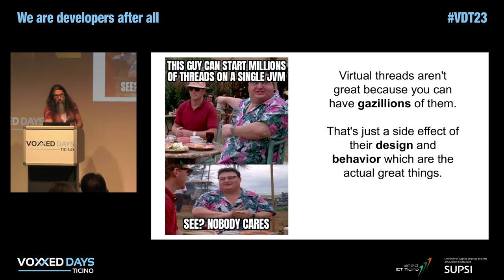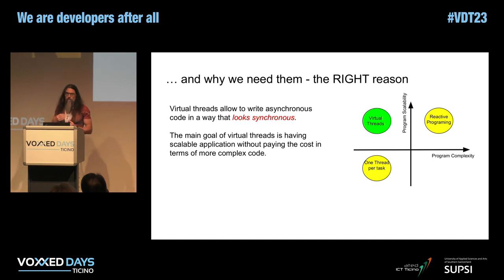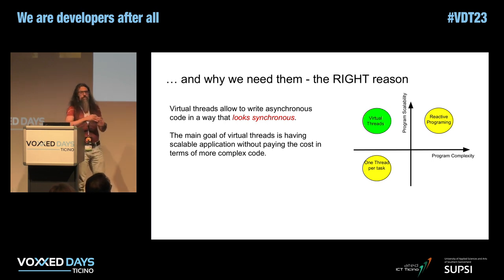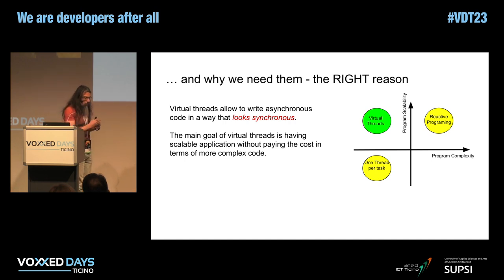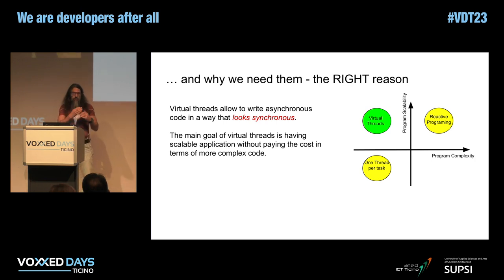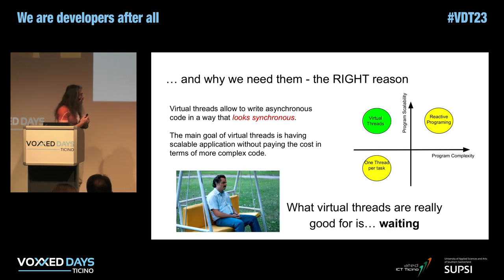In my opinion, the biggest selling point is that Project Loom allows us to have non-blocking code without polluting our code with tons of nested callbacks. If you have done reactive programming, you know what I'm speaking about. The blocking is managed this time by the environment, which simply allocates and deallocates the virtual thread when it does blocking code. In essence, there is one thing that virtual threads are really good at, which is waiting.